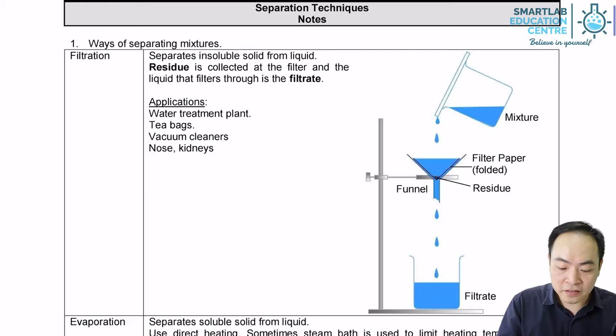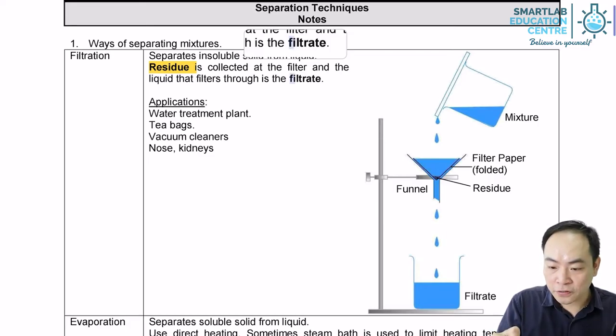In filtration, the insoluble solids that are trapped on the filter paper are known as residue, while the liquid that passes through the filter paper is known as filtrate.